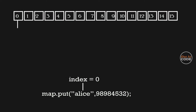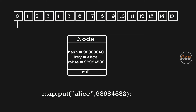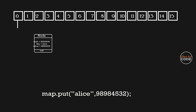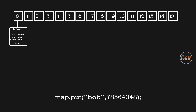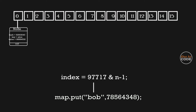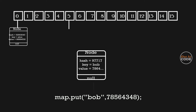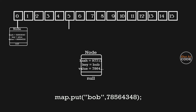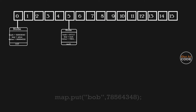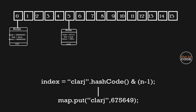So the node object will be stored at index zero. The node object contains the hash code value, key value, and next node link. Since there is no next node, the next node link is null. Next, we insert another entry into the HashMap. The hash code value is calculated for the given key, and the index is calculated from the hash value using a logical AND operation — here the index value is 5, so the node object is stored at index 5.